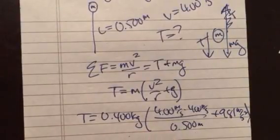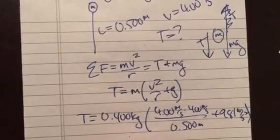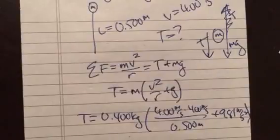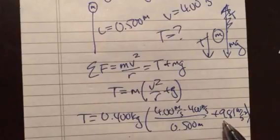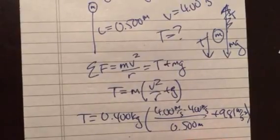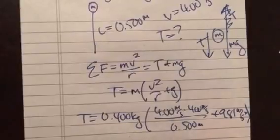Wow, that is a lot. That thing is booking around there. So 0.4 kilograms times 32 plus 9.81 is going to be 41.8 meters per second squared.